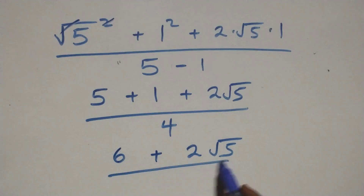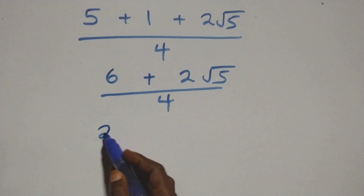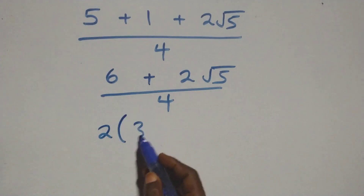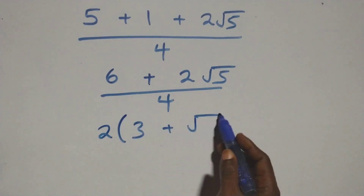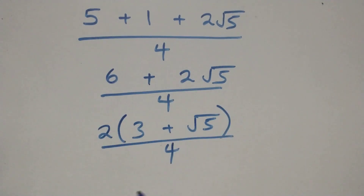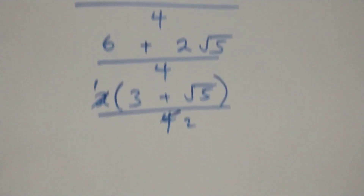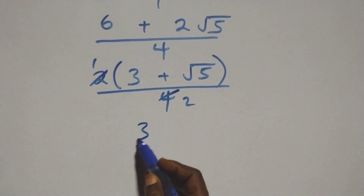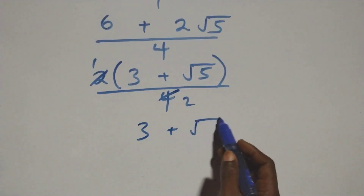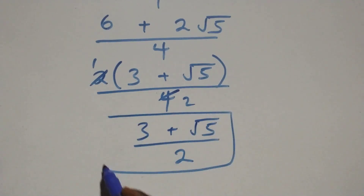So we have 5 plus 1 plus 2 root 5 over 4, which is 6 plus 2 root 5 over 4. We factor out 2 from the numerator: 2 times (3 plus root 5) over 4. The 2 cancels with the 4, giving us (3 plus root 5) over 2. This is the simplified form of the given problem using Method 1.